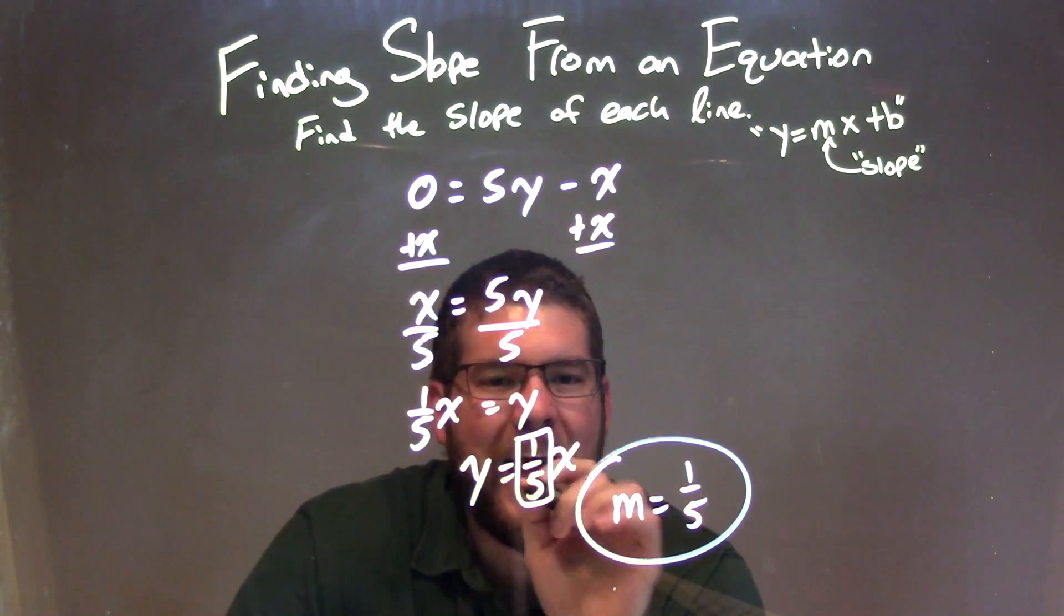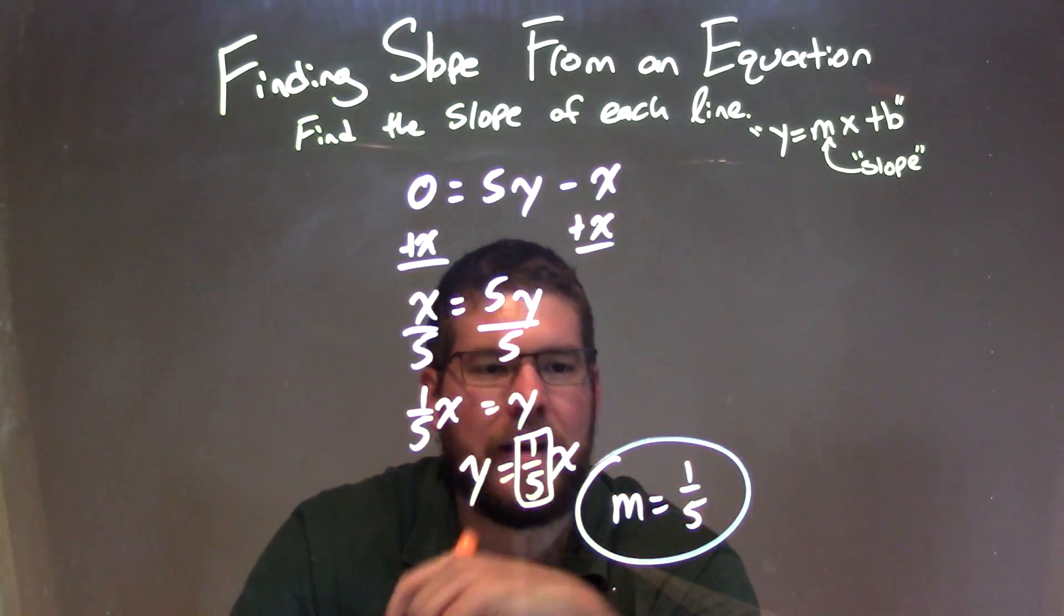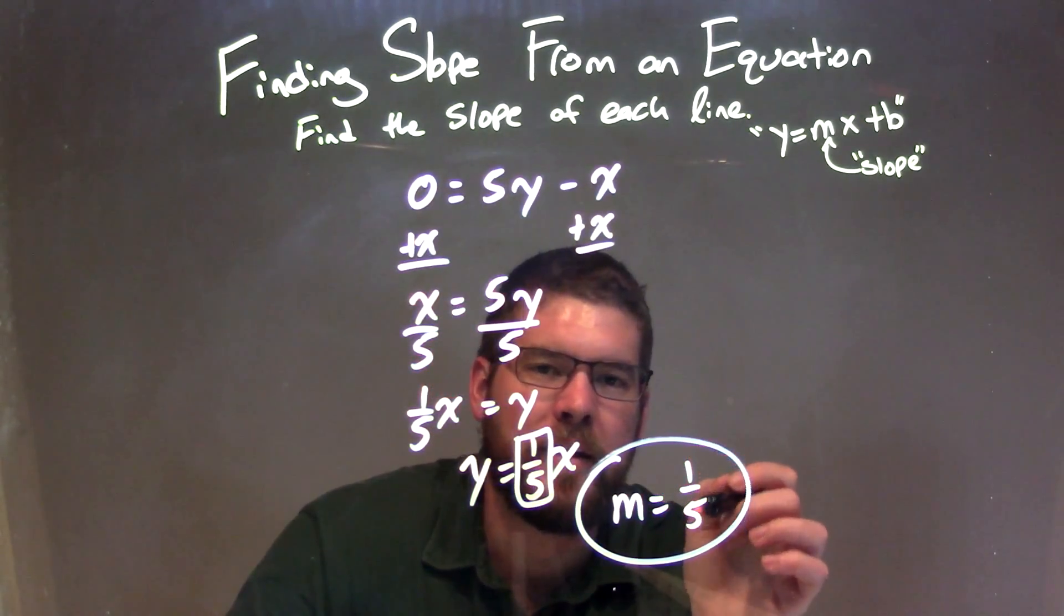y equals mx plus b, where m is the coefficient in front of x, which we see to be 1/5. So my final answer for the slope is m equals 1/5.